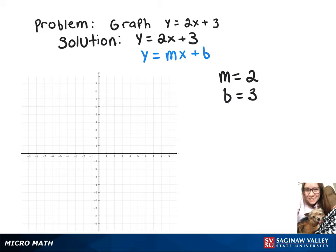On our y-axis, we're going to go up to 3 and plot a point there. Then we'll go up 2 points and over 1, and plot another point there, and draw a line right through those points.